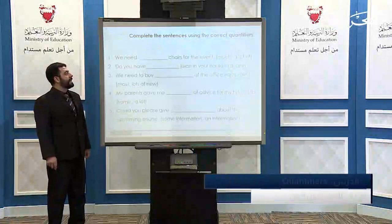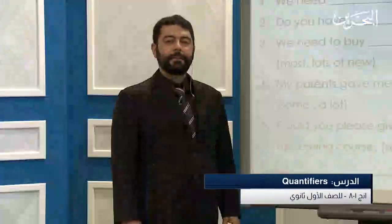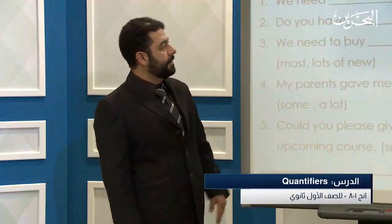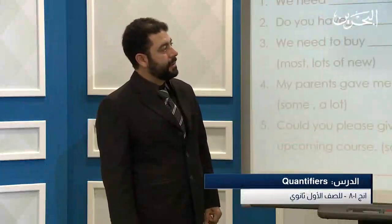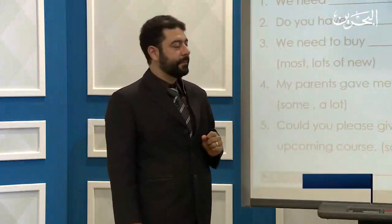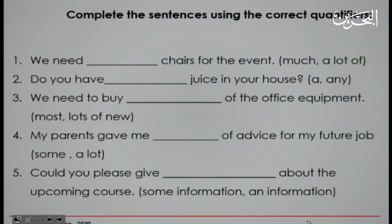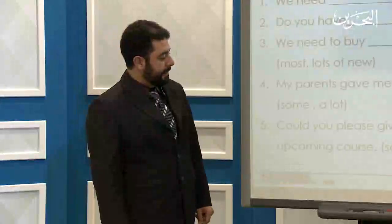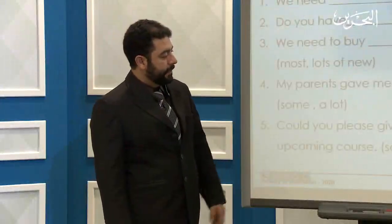Second task: complete the sentences using the correct quantifiers. Number one: we need ___ chairs for the event — choose between 'much' and 'a lot of.' Two: do you have ___ juice in your house? — 'a' or 'any.' Three: we need to buy ___ office equipment — 'most,' 'lots of,' or 'new.' Four: my parents gave me ___ advice for my future job — 'some' or 'a lot.' Five: could you please give me ___ about the upcoming course? — choose between 'some information' or 'information.' You have two minutes.